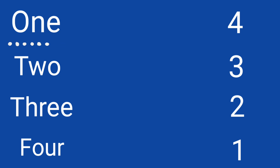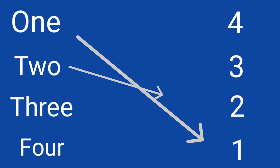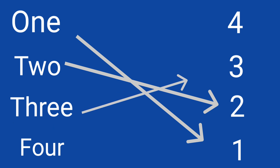O-N-E, 1. This is 1. Tell me children, where is 2? T-W-O, 2. This is 2. Where is 3? T-H-R-E-E, 3. Yay! This is 3.